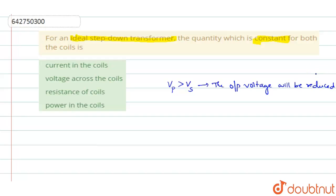When you say it is a step down transformer, the voltage across primary will be greater than secondary. Which means the number of turns in primary will be greater than the number of turns in the secondary. Which means input voltage will be greater than the output voltage.